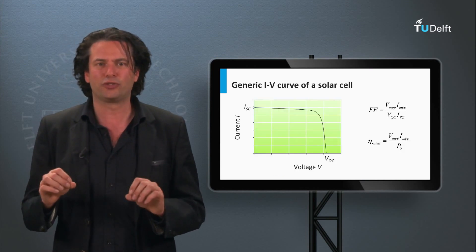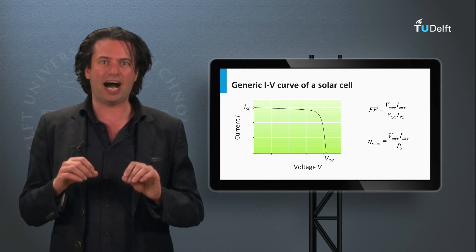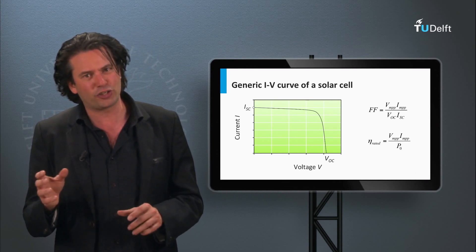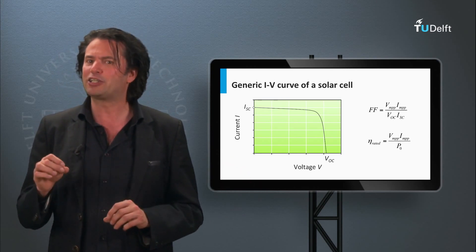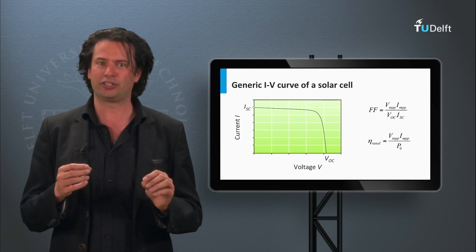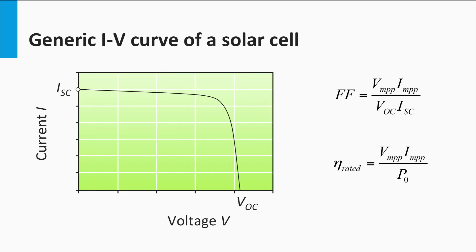So let us move onto the module level concepts. First of all, I would like to introduce a new term, the IV curve. So far we have been discussing the JV curve at the solar cell level, J being the current density, current per unit area. But at the module level, the total current that the module can generate is of more interest. Hence, we look at an IV curve, or the current voltage curve. As the area is a constant, the IV and JV curve of the solar cell or solar module will have identical nature.